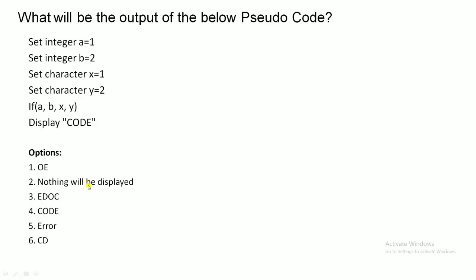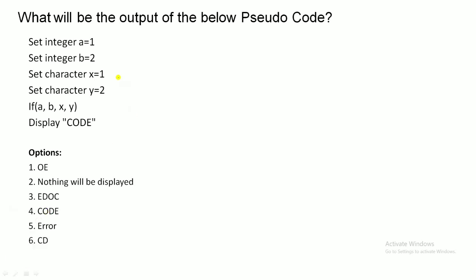The first question: integer a = 1, integer b = 2, character x = 1, character y = 2. The condition is if(a, b, x, y). There is no explicit condition in the if block, and all values are non-zero, so they are considered 1. Since the condition is true, control enters the if block and displays the output as 'good'. I hope you guessed it right.